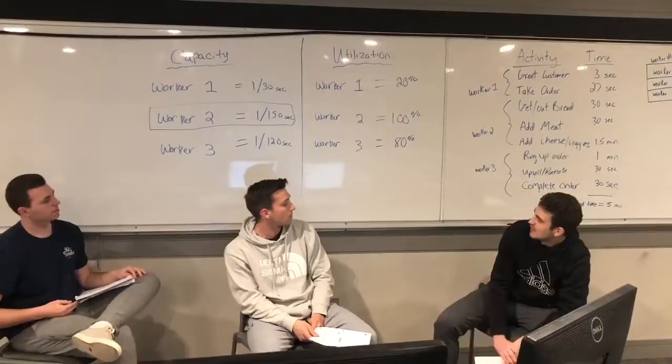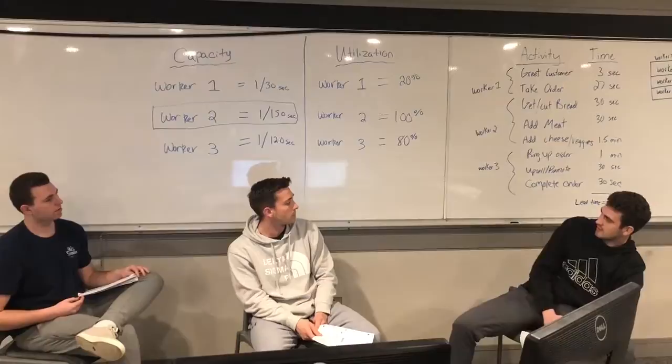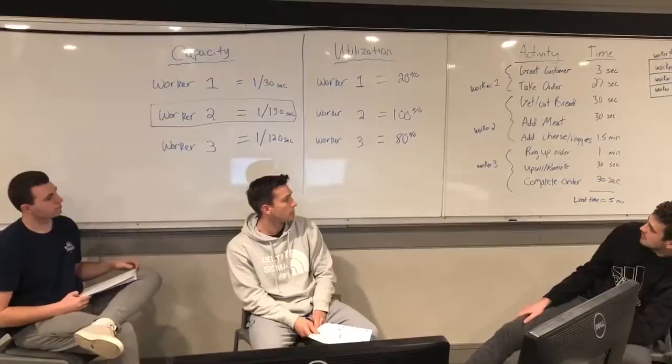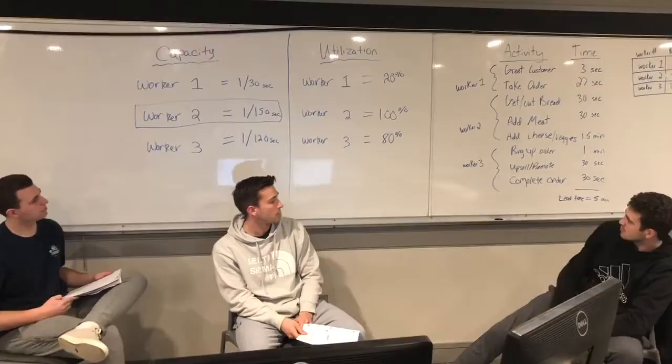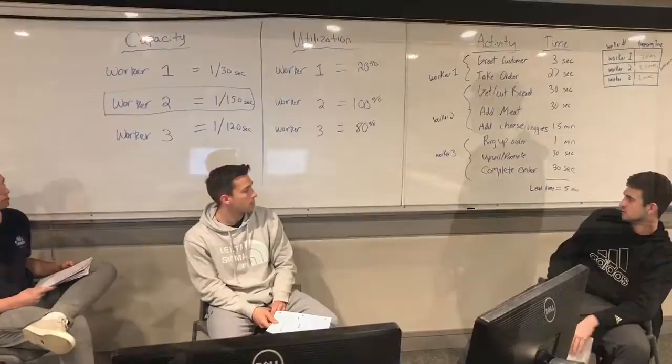We can also see that worker two is the bottleneck because it has 100% utilization. If we calculate that, our demand is unlimited, so our flow rate is just going to be the lowest capacity, which is one divided by 150. Taking that and dividing by each capacity, we get 20% and 80% utilization. So we probably should increase worker one's load since worker two is at 100% utilization.